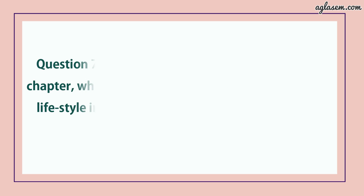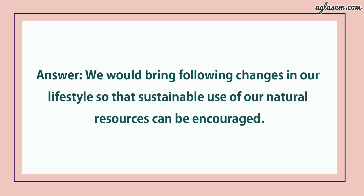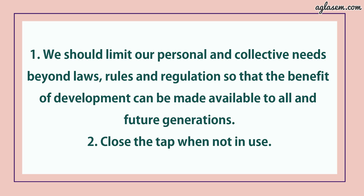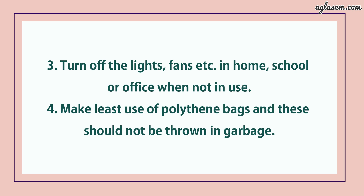Question number 7 says: on the basis of the issues raised in this chapter, what changes could you incorporate in your lifestyle to move towards sustainable use of our resources? We would bring the following changes in our lifestyle so that sustainable use of natural resources can be encouraged. First, we should limit our personal and collective needs so that the benefit of development can be made available to all and future generations. Second, close the tap when not in use. Third, turn off lights, fans etc. at home, school or office when not in use. Fourth, make least use of polythene bags and do not throw them in garbage.